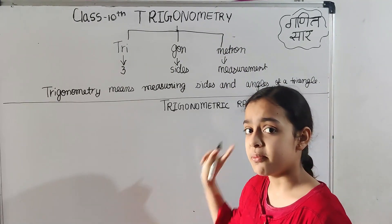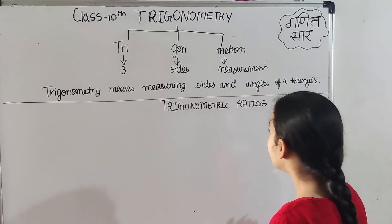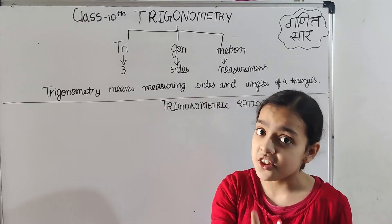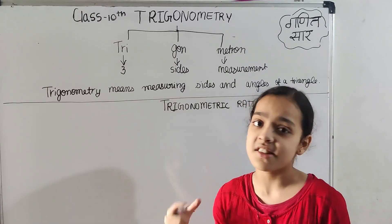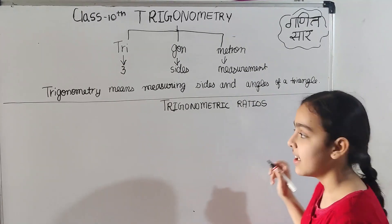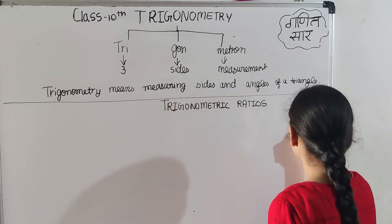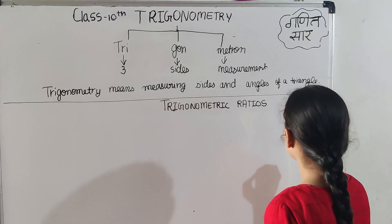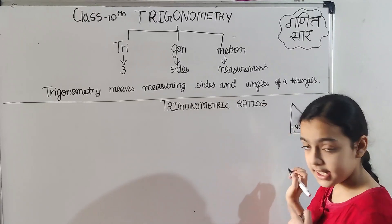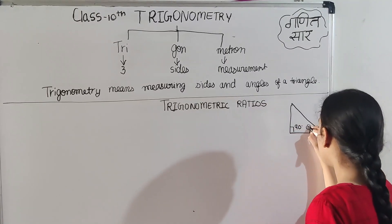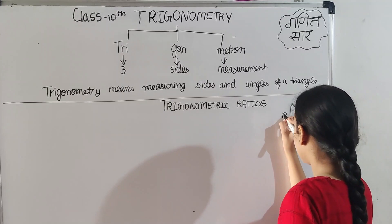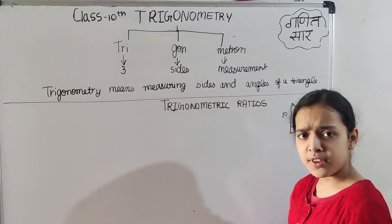I hope you have understood the topic of trigonometry. Now we will discuss trigonometric ratios. There are only six trigonometric ratios in a right angle triangle. Let's draw the diagram of a right angle triangle. This is 90 degrees, this angle is called theta, this is the hypotenuse, this is perpendicular, and this is the base.